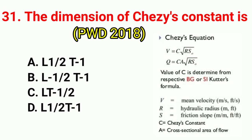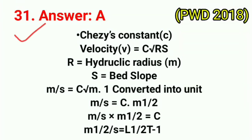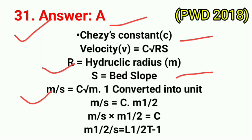Question No. 31. The dimension of Chezy's constant is? Correct answer is option A: L^(1/2) T^(−1). Using the formula: Chezy's constant C = V / √(RS), where R is hydraulic radius in meters and S is bed slope. Converting units: m/s = C × √(m × 1), giving C = m^(1/2)/s = L^(1/2) T^(−1).